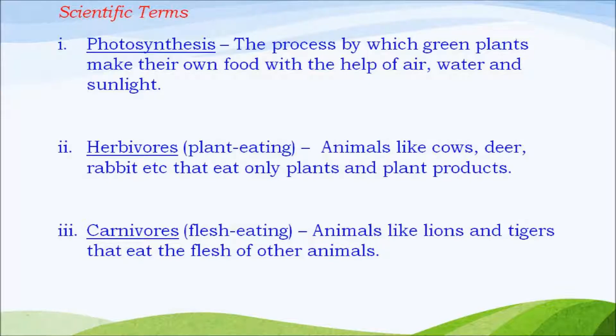Scientific terms learnt in the lesson: Photosynthesis is the process by which green plants make their own food with the help of air, water and sunlight. Herbivores are animals like cows and deer that eat only plants and plant products. Carnivores are animals like lions and tigers that eat the flesh of other animals. Hope you understood the lesson. Thank you and have a good day.